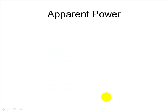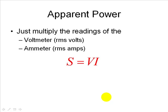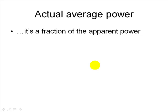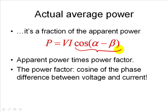When we measure volts and amps using an RMS ammeter and voltmeter, we get two real numbers. Multiplying those readings gives us not the actual power but the apparent power — the product of RMS volts times RMS amps — with units of volt-amperes (VA), kilovolt-amperes (kVA), or megavolt-amperes (MVA). The actual average power is that apparent power multiplied by the power factor, which is the cosine of the phase difference between voltage and current.